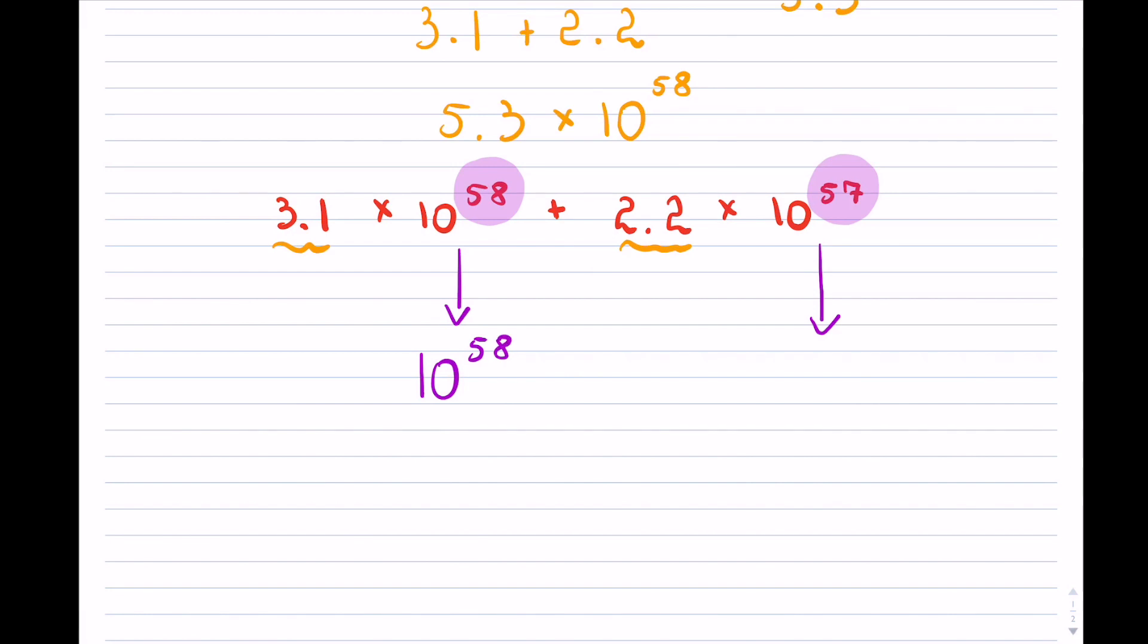And the largest exponent, that number will stay the same, so notice it's identical. However, the one with the different exponent I will have to change. Now what has happened here if I changed from 57 to 58? Well, I made it bigger by one, and here the concept of bigger-smaller...